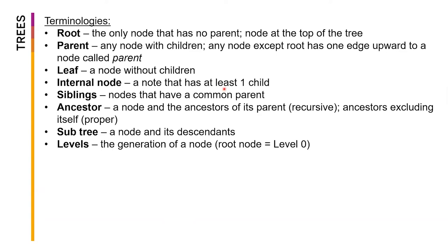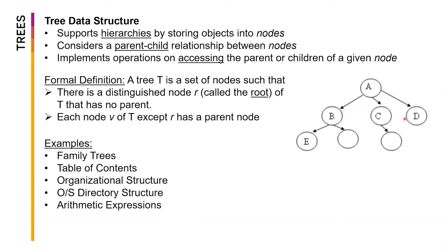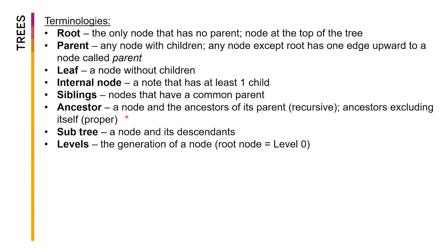Siblings are nodes that have a common parent. From our example, B, C, and D are sibling nodes because they share one common parent, which is node A. An ancestor is the node and the ancestors of its parents. If we look at the ancestors of E, that would be E, B, and A — that's the recursive definition.